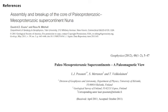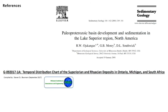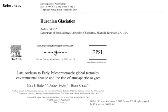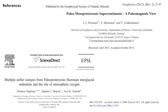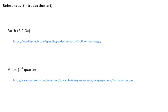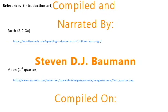I wanted to do something fun for once instead of just boring lectures — to show how we reconstruct continents and how uncertain things become the further you go back in time, and how we need better data to figure this stuff out. These are my references at the end. If you have any questions or comments, please leave them below — I'll answer any questions, and I hope you learned something.